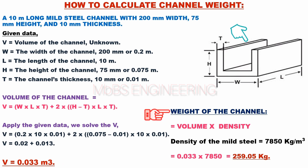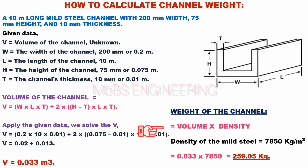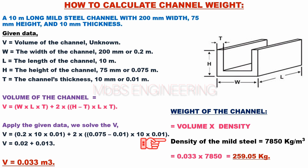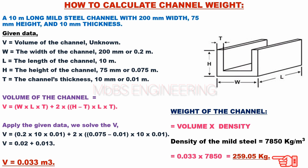We calculate the weight of the mild steel channel. Volume is multiplied by density. The density of mild steel is 7850 kilograms per cubic meter. Therefore, 0.033 multiplied by 7850 equals 259.05 kilograms. The weight of the mild steel channel is 259.05 kilograms.